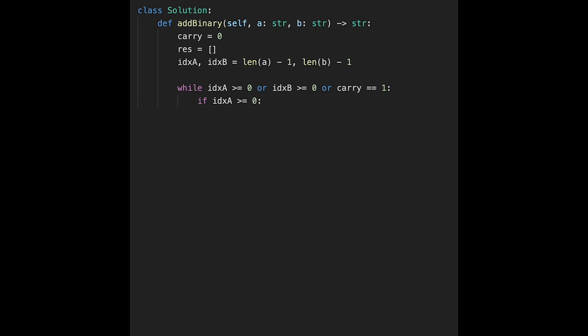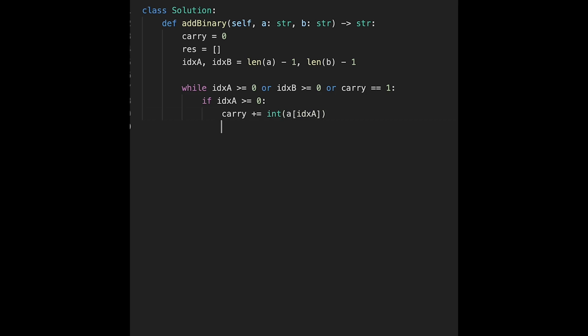So if index a is greater than or equal 0, in that case, we use carry for calculation. So carry plus equals and convert to integer from string, so a and index a. And then after that, we want to move index number to next. So index a minus equals 1, because we iterate through from the end. So next index number should be minus 1. And some people wondering why we check the same condition again here and here. That's because this is OR and OR. So if we meet one of our condition, we continue. So that's why there is a possibility that index a is already less than 0. So that's why we need to check again.